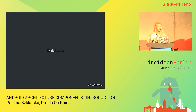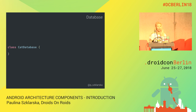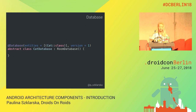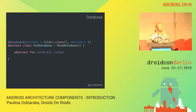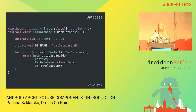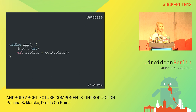Now we have an Entity and a DAO, and we need to bind everything together. To make it work, we need to use the database class. To create a database class, we use the @Database annotation, we need to extend the RoomDatabase class, and we need to have at least one method returning a DAO object. Thanks to this, we can use the database builder to create our database class, and after this we can easily use Room for inserting or accessing our data.